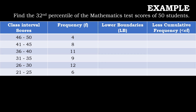For the lower boundaries, what we're going to do is subtract 0.5 from the lower score of the class interval. So from 46, that is 46 minus 0.5, it becomes 45.5, which is the lower boundary. The lower boundary of 41 to 45 is 40.5. For 36 to 40, that is 35.5. For 31 to 35, that is 30.5. For 26 to 30, that is 25.5. And for 21 to 25, that is 20.5.